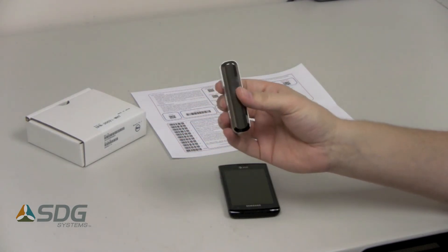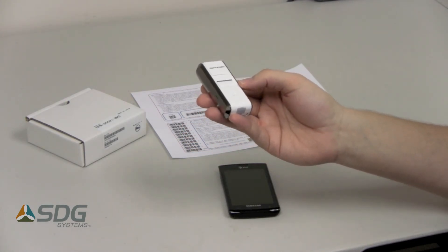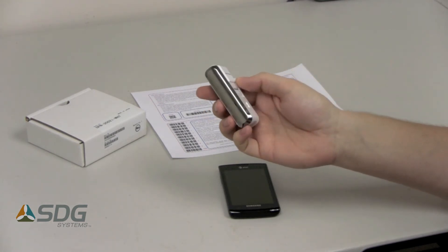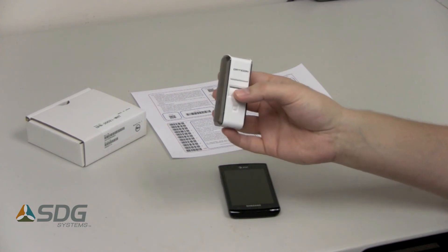So once again, this is the Opticon OPN3002i Bluetooth barcode scanner. It's a really great way to just expand your capabilities of your Android iOS device.